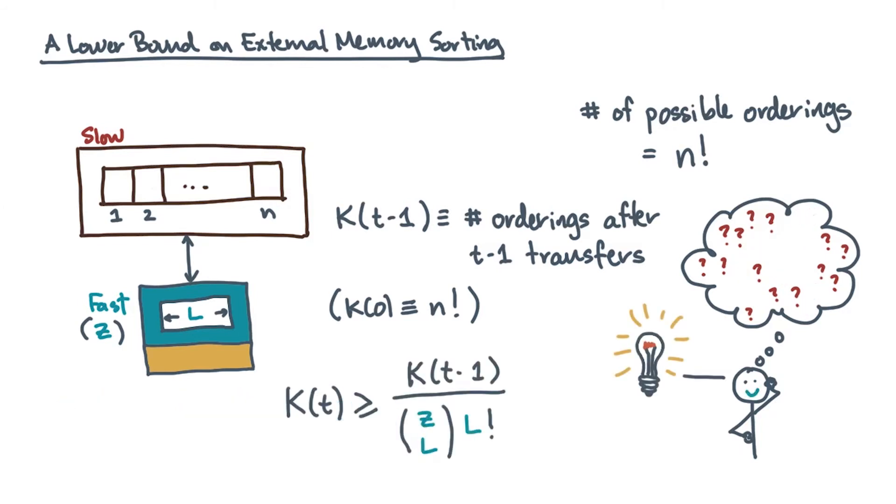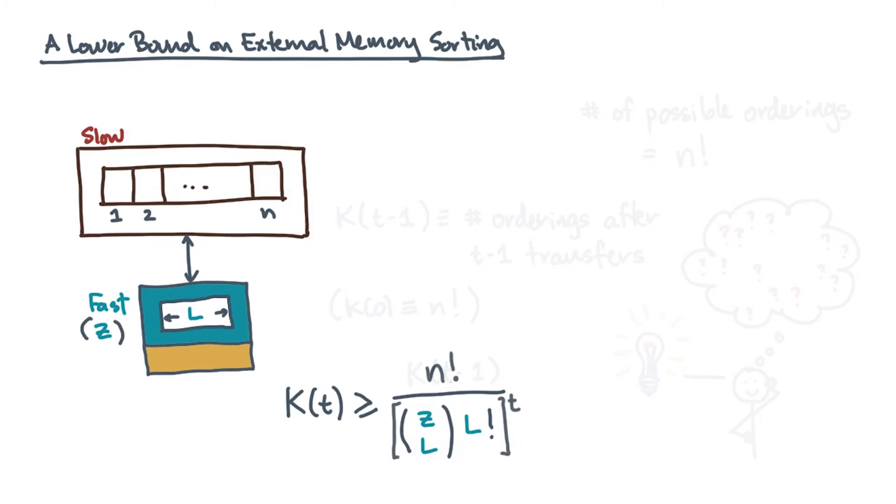Then, after t reads, here's the lower bound on the number of possible orderings. It's n factorial divided by z choose l times l factorial quantity to the power t.